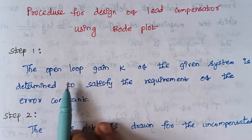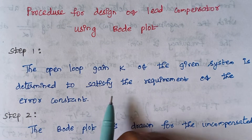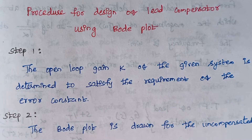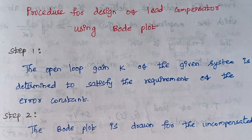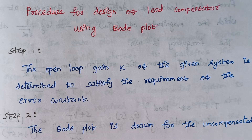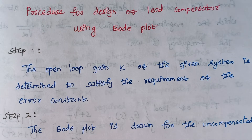Step 1 is the open loop gain K of the given system is determined to satisfy the requirement of the error constant. A transfer function will be given in the problem with the constant K. To find the value of K, some other things will be given in the problem — for example, steady state error, velocity error constant, or positional error constant. Using those error constant values we should find the value of K.